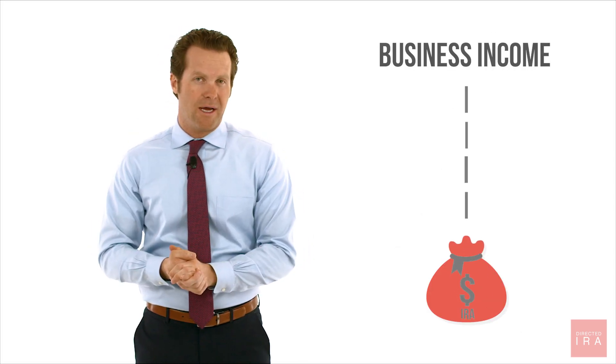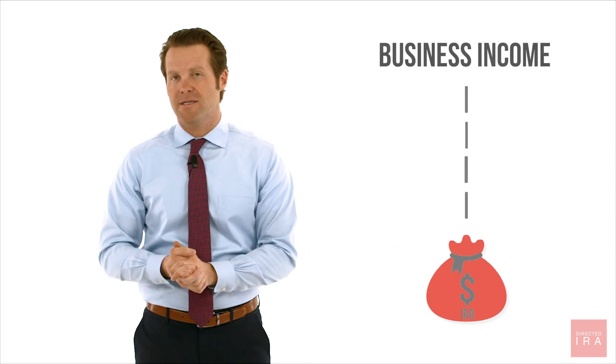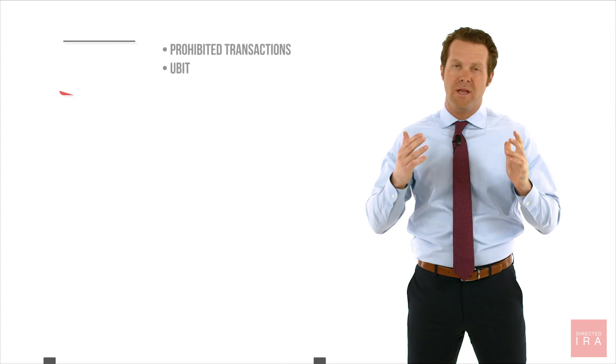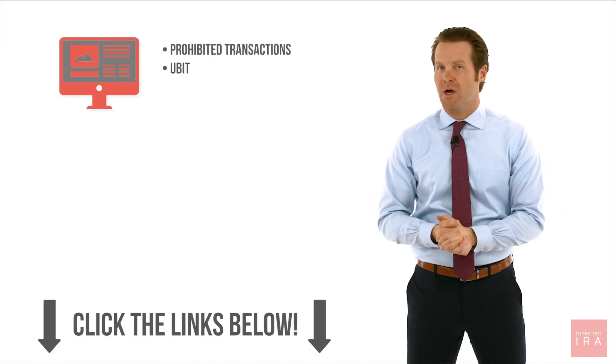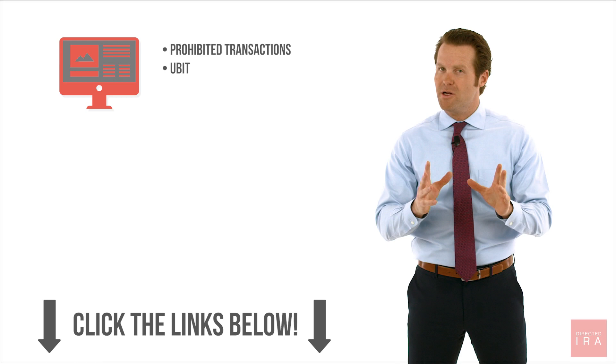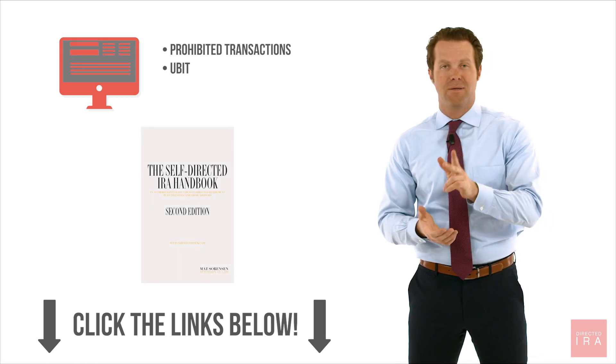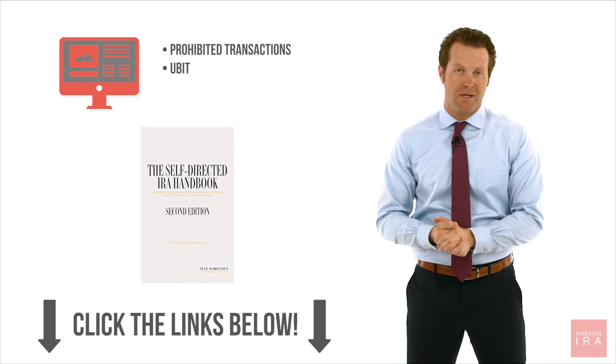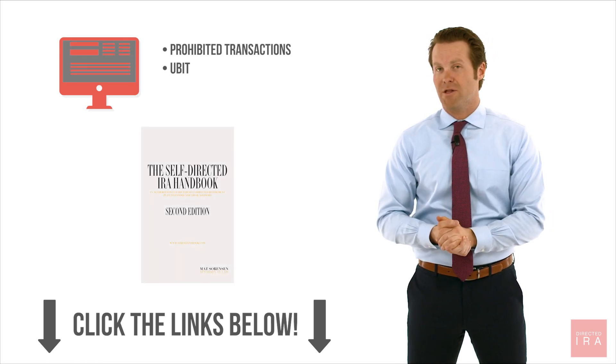But if you're getting business income directly in the IRA, that can cause this UBIT tax. I've got plenty of articles — check out the description below on prohibited transactions and on UBIT. They can be a little more technical, and I've got chapters in my book on each of those subjects as well. But that's what you need to know to self-direct your IRA. 99% of the rules and issues that self-directed IRAs face revolve around those three things.